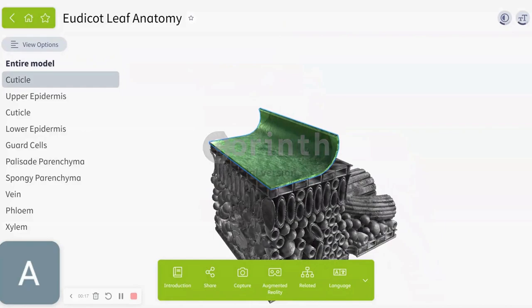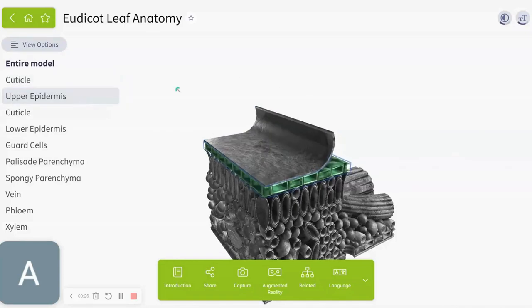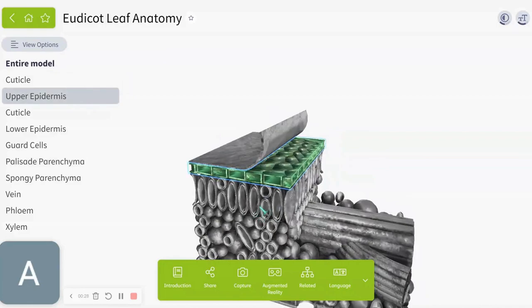Basically to protect any water loss from happening and to protect the plant from any pathogens. The upper epidermis serves as a second cuticle and makes the leaf kind of rigid so it doesn't droop down as easily as it should.